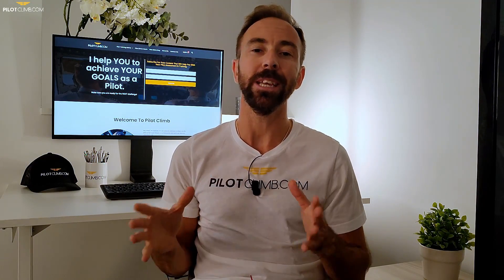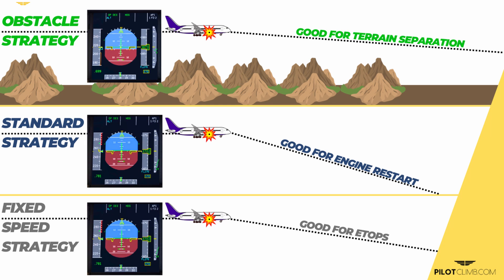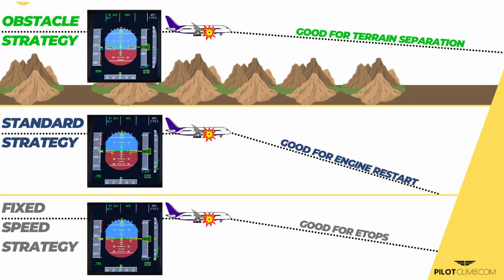Airbus has three different strategies for engine failure in cruise: a standard strategy, an obstacle strategy, and a fixed speed strategy, depending on conditions. For the standard strategy, the steps are the same — MCT, disconnect auto thrust, deviate left or right, figure out single-engine altitude, and start the descent. The key difference between the three strategies is the speed used for the descent. For the standard strategy, they recommend 0.78 Mach or 300 knots during the descent.